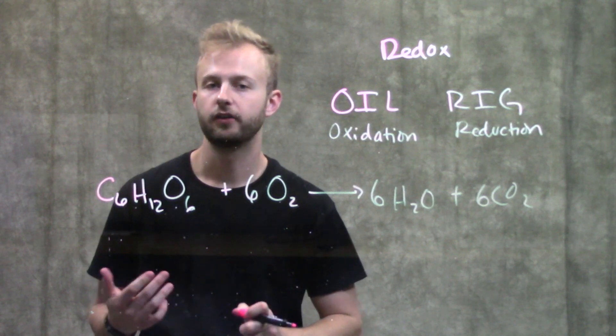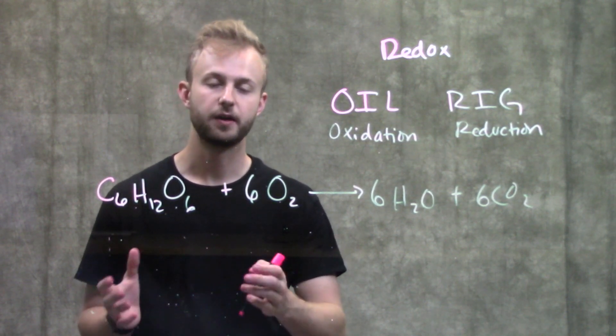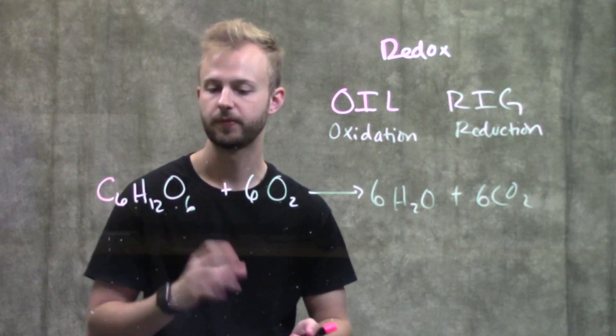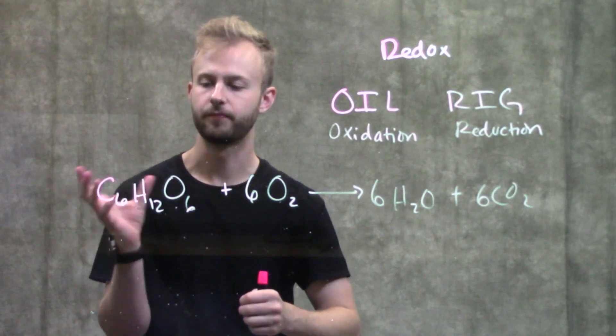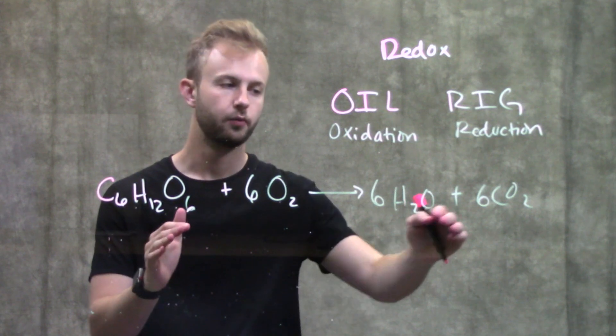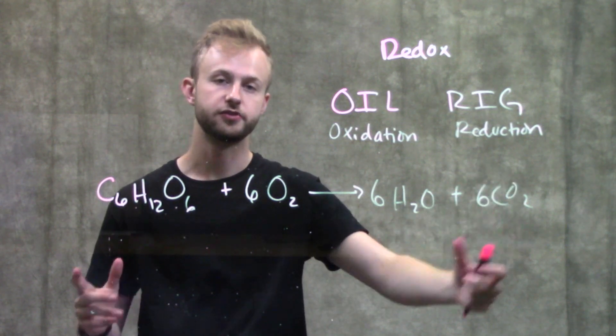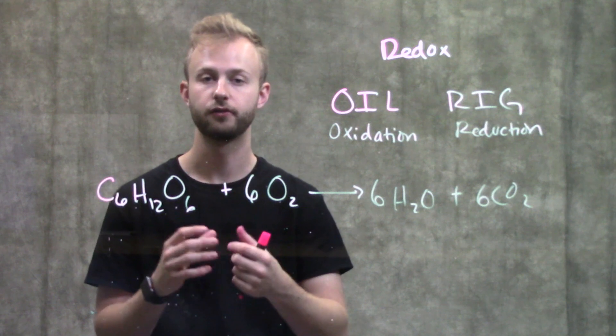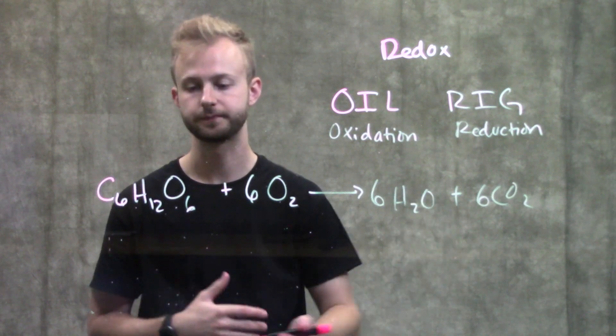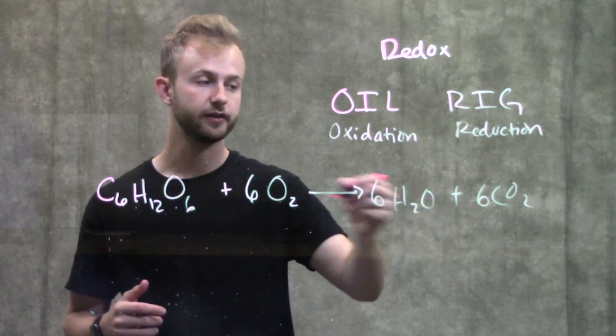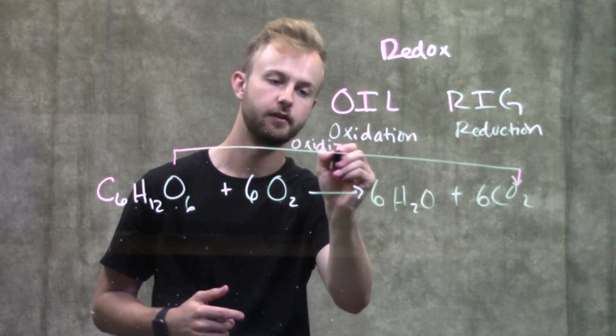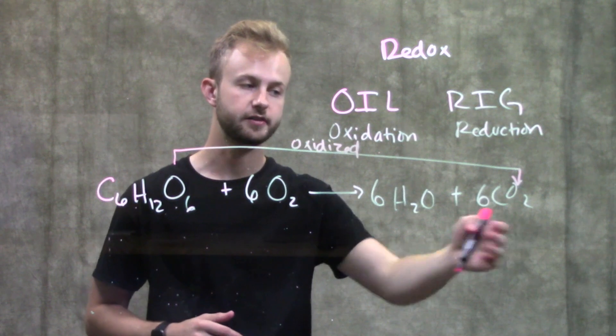Another way to tell if something's being oxidized or reduced is by the number of bonds to oxygen. For example, glucose has six oxygens, but that doesn't mean there are necessarily a lot of bonds between carbon and oxygen. With carbon dioxide, we have one carbon with two oxygens, so that carbon is bound to oxygen four times because each bond is a double bond. Since we're increasing the number of bonds to oxygen, glucose got oxidized to CO2.